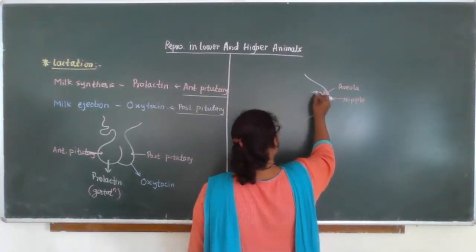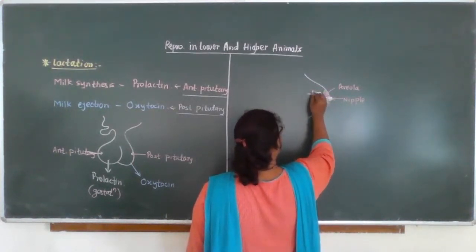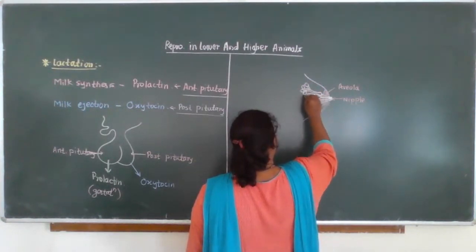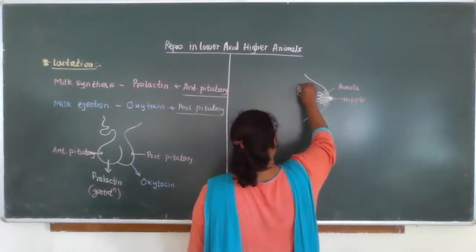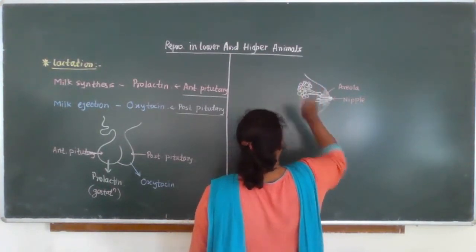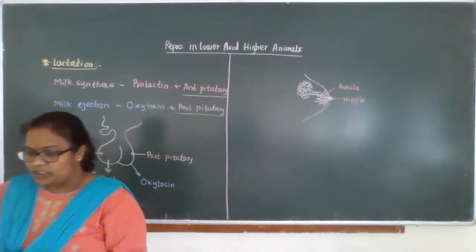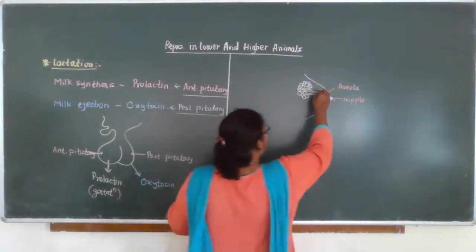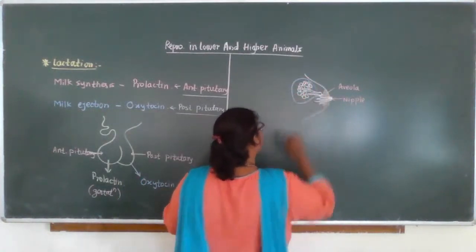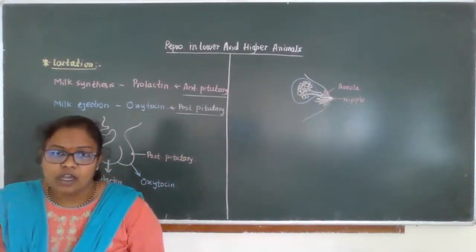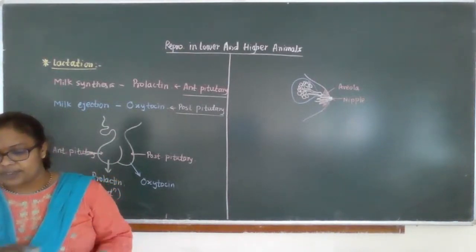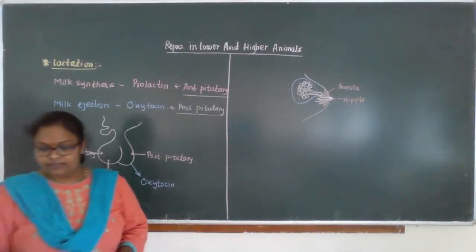The lactiferous ducts enlarge and then divide into fine branches that go into the alveolus. These are called mammary alveoli. The lobe contains these alveoli, and these mammary alveoli are responsible for the synthesis of milk. The structure contains the mammary alveolus within the mammary lobe.